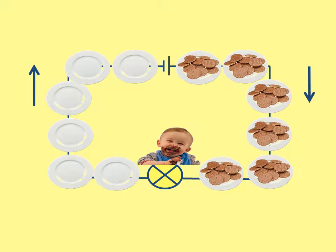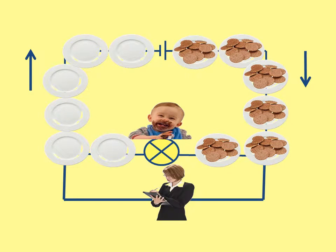Here's a continuation of that analogy. There are lots of plates of biscuits on the right; they go through the baby and the baby eats the biscuits, and the plates are empty on the left until they reach the battery at the top and get biscuits again. In the analogy: the battery gives the charge energy, it continues around the circuit until it gets to the bulb, then it loses energy as light, and the charge continues back to the battery.